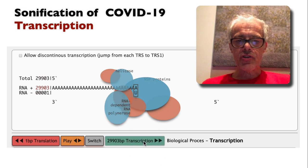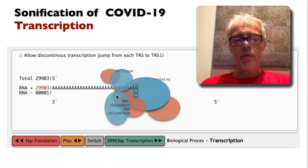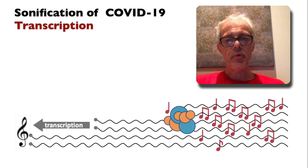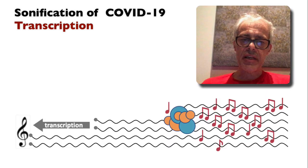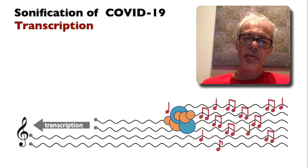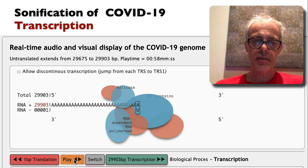If we take a look at transcription, we start from the other end of the genome. At the three prime end there's a poly A tail. So when we start playing this, we're now reading it in the opposite direction. You'll hear the A's playing, and then when we get into the more complex part of the sequence, you'll hear the audio change.